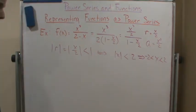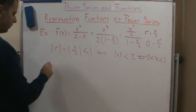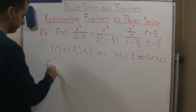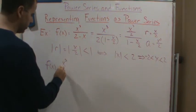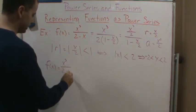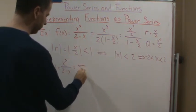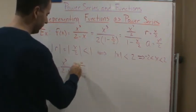Okay, and so now that means that I can rewrite f of x is equal to x cubed over 2 minus x, is also equal to the summation of n equals 0 to infinity of what.